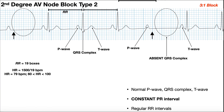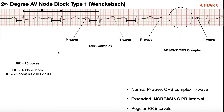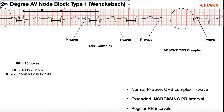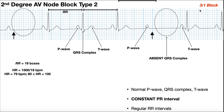We can also quantify second degree AV node blocks. This one is a 4-to-1 block — between the absent QRS complexes there are four complete QRS cycles. This other one is a 3-to-1 block, because we can clearly see two dropped QRS complexes and there are three QRSs between them. So we can quantify these second degree AV node blocks as well.